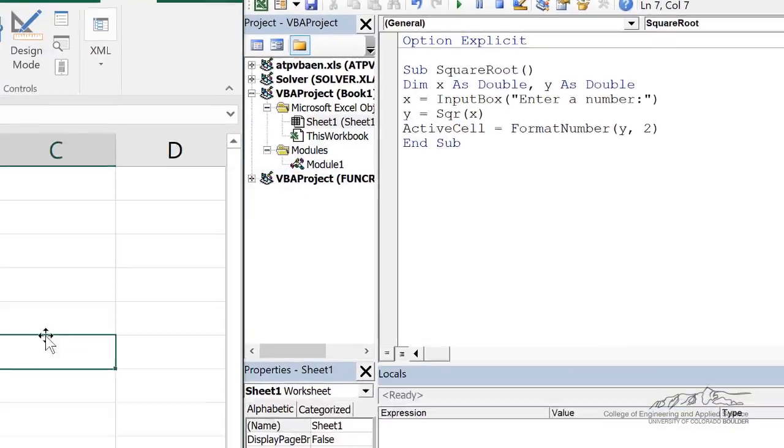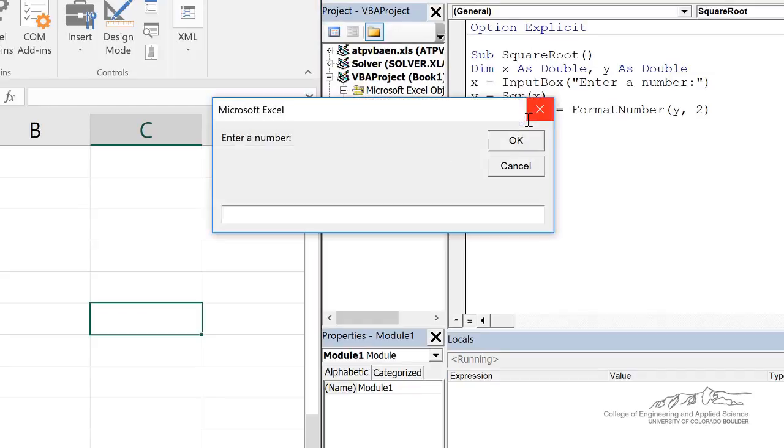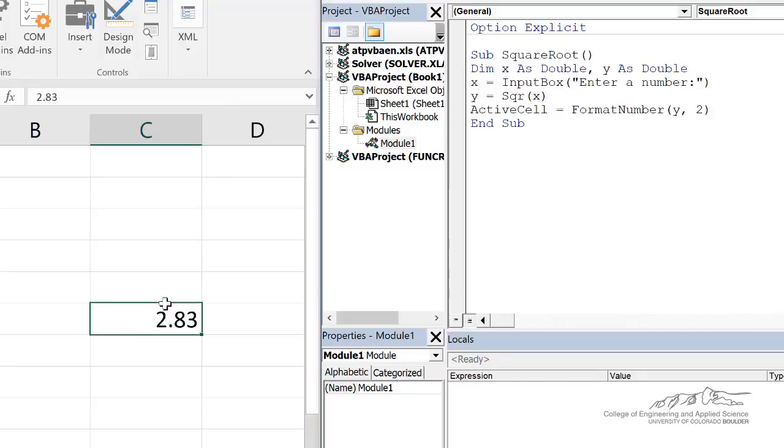So I can put my active cell wherever, and I run this using F5. Enter a number, 8, and it outputs it to the active cell.